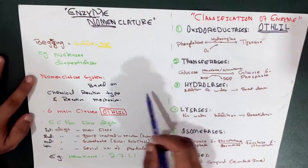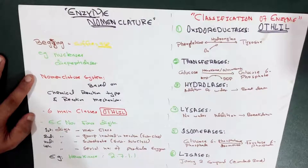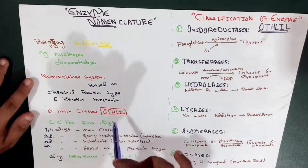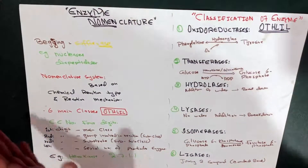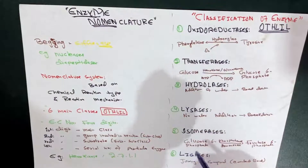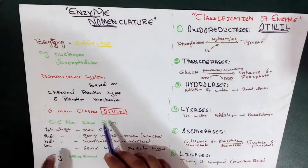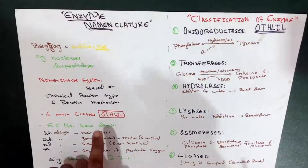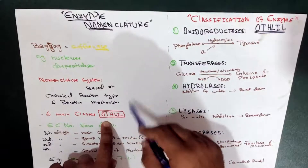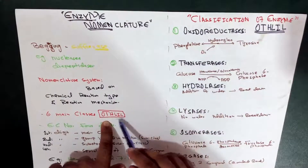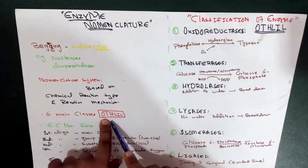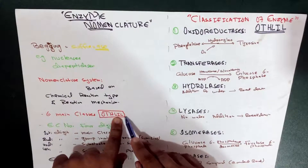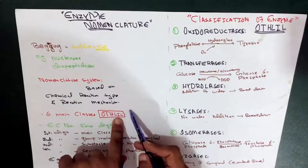On that basis we have six classes of enzymes, which can be remembered by the formula 'OTHLIL': O for oxidoreductases, T for transferases, H for hydrolases, L for lyases, I for isomerases, and the last L for ligases. Never shuffle lyases and ligases — ligases always come last, as mixing them up causes misunderstanding.